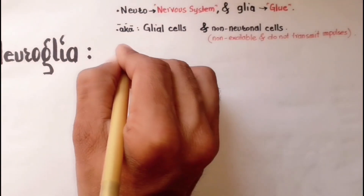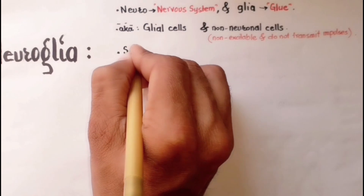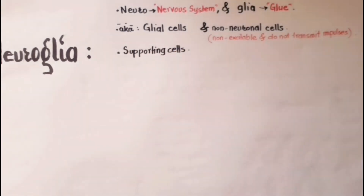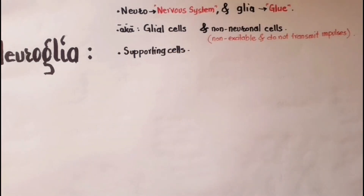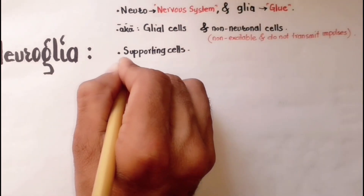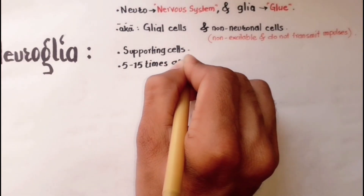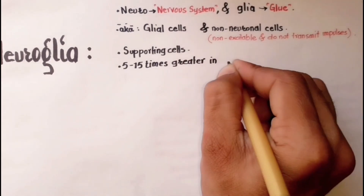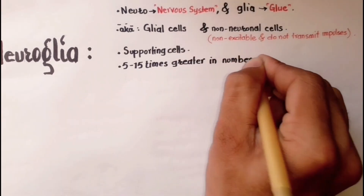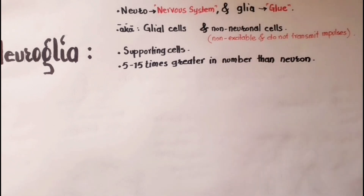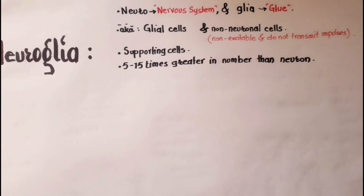Neuroglia or glial cells are the supporting cells of the nervous system. Compared to neurons, glial cells are 5 to 15 times greater in numbers than neurons in the nervous system, because these cells can divide whereas neurons do not normally divide.